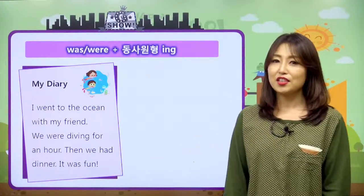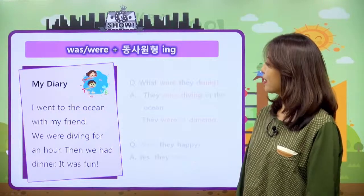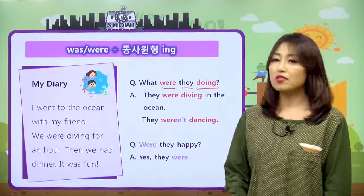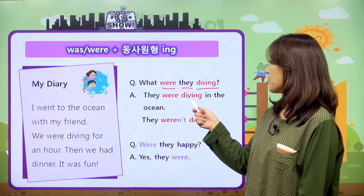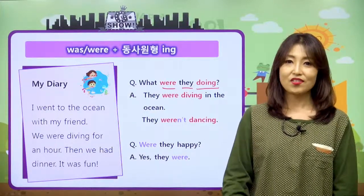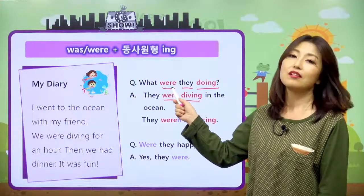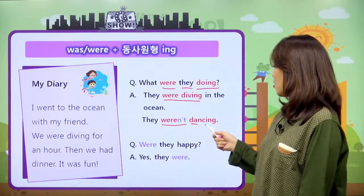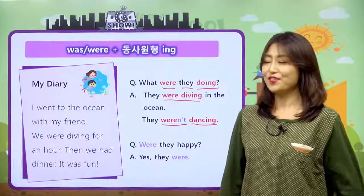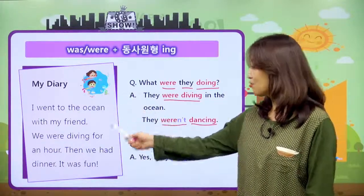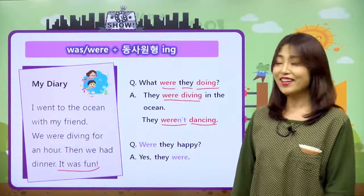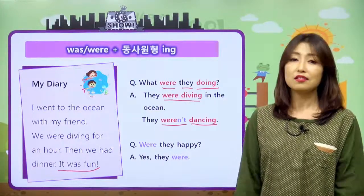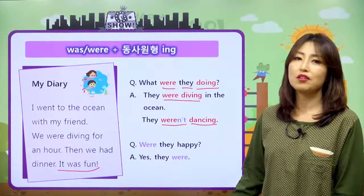My diary를 바탕으로 퀴즈를 해볼게요. 'What were they doing?' — 그들은 무엇을 하고 있었어요? 답은 'They were diving in the ocean' — 그들은 바다에서 다이빙을 하고 있었다. 부정문은 not 붙여서 'They weren't dancing' — 그들은 춤추고 있지는 않았어. 'Were they happy?' — 그들은 행복했나요? 일기에 'it was fun'이라고 했으니까 'Yes, they were'라고 답하면 되죠. were로 물어봤으니 were로 답하고, 아니라면 'No, they weren't'라고 하면 되겠어요.